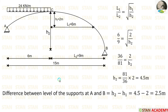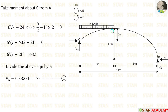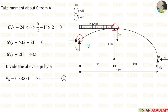Now let us calculate the horizontal thrust of the arch. To find the horizontal thrust, we have to form two equations. We take moment about C from point A, and again take moment about C from point B — since the moment at the hinged crown C is zero — giving us two equations to find the horizontal thrust and the vertical reactions.